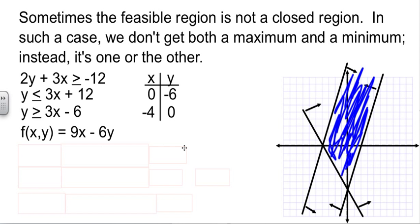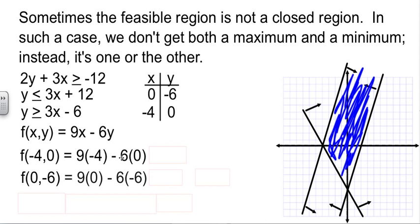We can get two corners. We have negative 4, 0 as a corner, and 0, negative 6 as a corner. So, we'll plug those values in. 9 times negative 4 minus 6 times 0 is negative 36. 9 times 0 minus 6 times negative 6 is positive 36.